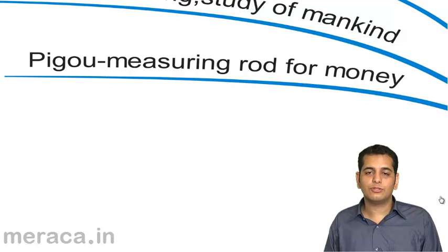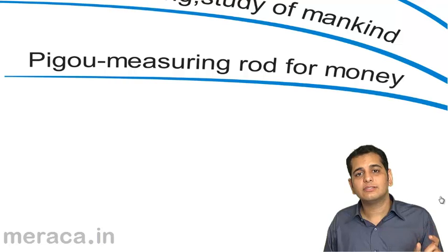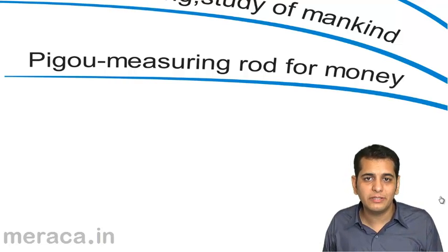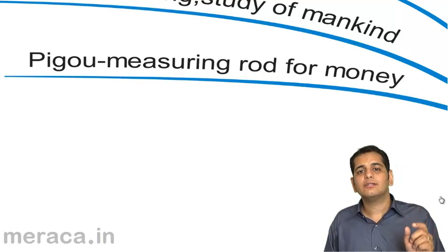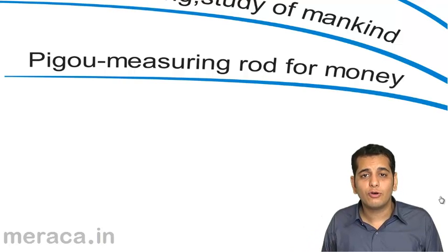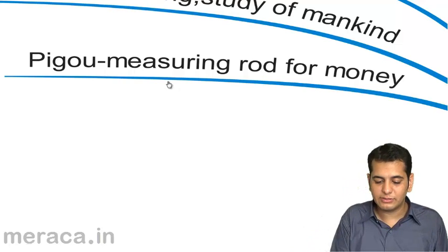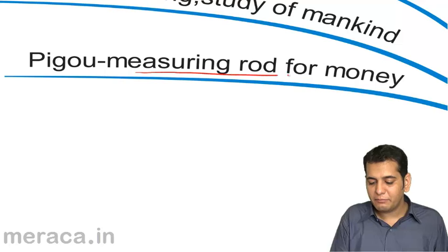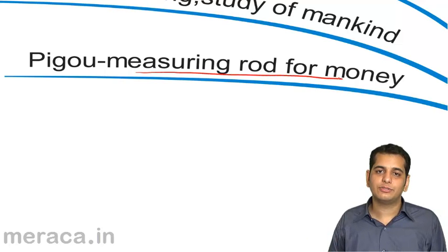Then we studied the definition of Pigu who said economics is a science of welfare of human beings, but it has to be measured in the rod of money. He gave us the money measuring rod definition.